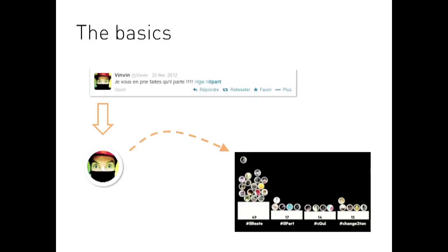So how it works: each tweet is encoded in a small bubble, and the bubble is textured with the avatar of the Twitter user. The bubbles are launched from the top left of the screen — it might remind you of Angry Birds, maybe — and it fills a bar chart according to the hashtag of the tweets.